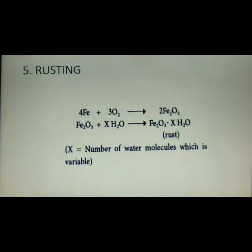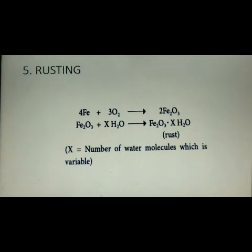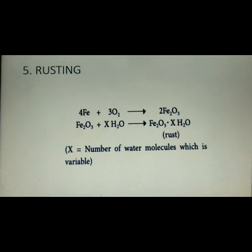The fifth property is rusting. Rusting generally occurs in iron. Iron combines with oxygen to form iron oxide, and during that process rust is formed. Rust is a hydrated form of ferric oxide.